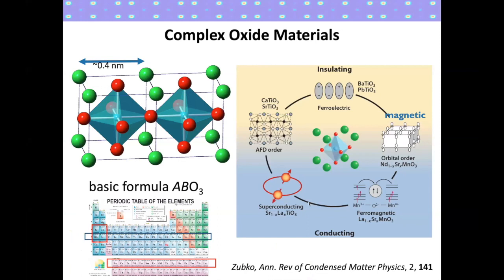The material I'm going to be talking about is the transition metal perovskite oxides. In these materials, we have this basic perovskite structure where you have a transition metal ion surrounded by an octahedra of oxygen. At these sites here, you can have either group one or group two or the lanthanides occupying these sites.